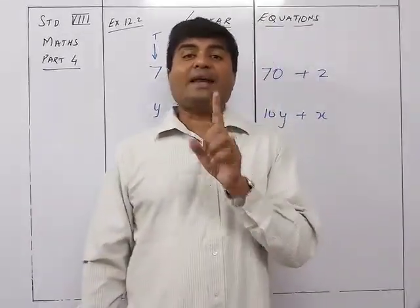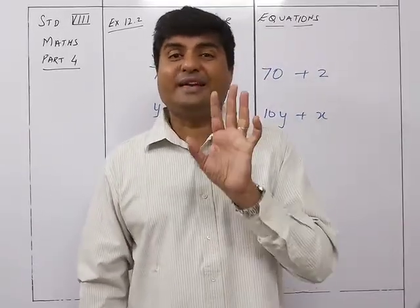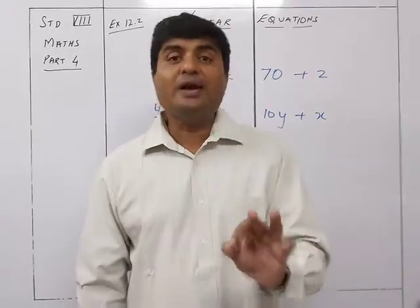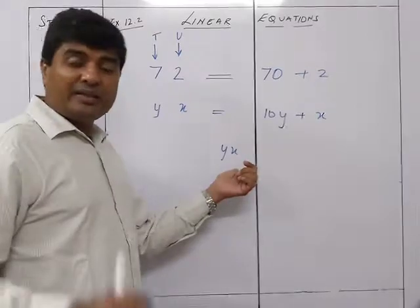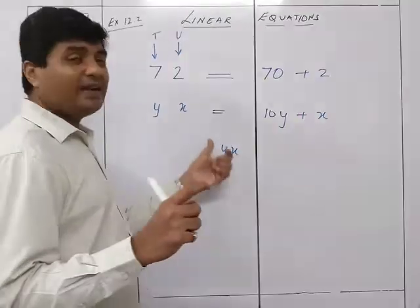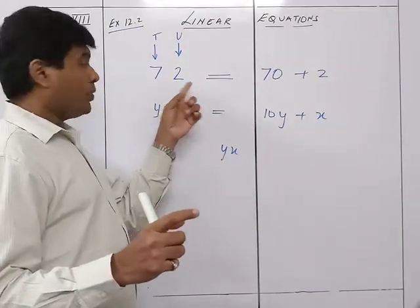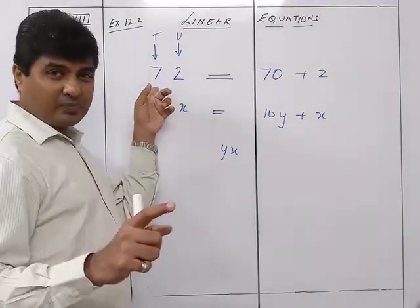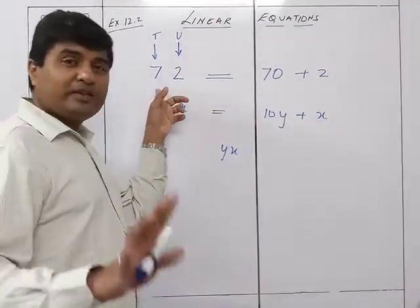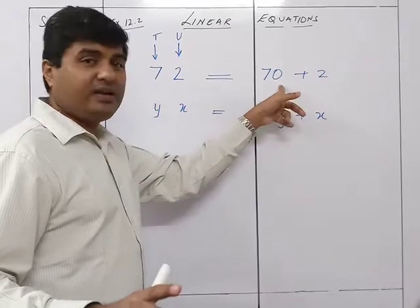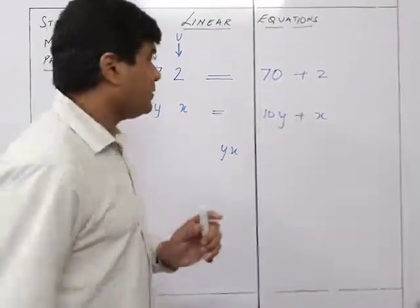When you are writing the number it will be 10x plus y or 10y plus x. But if you are only talking about the digits, the digits will be x and y — the face values. The face value of 2 is 2, the face value of 7 is 7, but the place value of 7 is 70. This is very important when solving sums based on two-digit numbers.